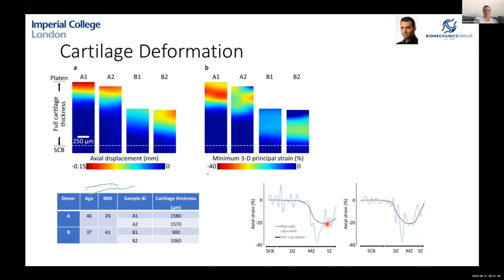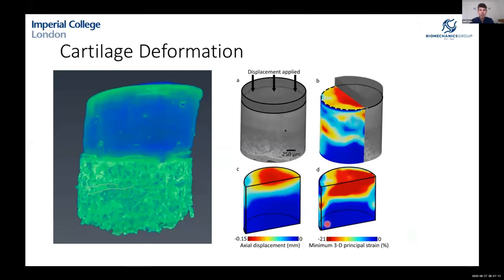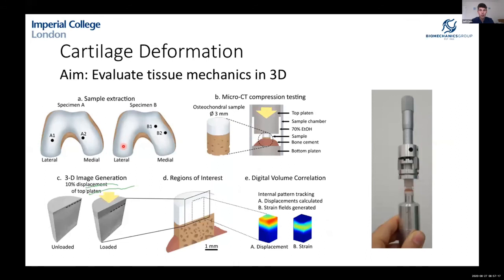Regarding differences in cartilage properties depending on location within a joint: it's too early to say from our data, but previous studies have shown vastly different properties depending on sampling location. The thickness of cartilage also varies enormously — it's much thicker in the middle of the condyle than at the periphery. So it's probably optimistic to expect one set of mechanical properties to match every situation. In the future, access to large numbers of cadaveric examples could allow exploration across different ages, BMIs, and stages of degradation.